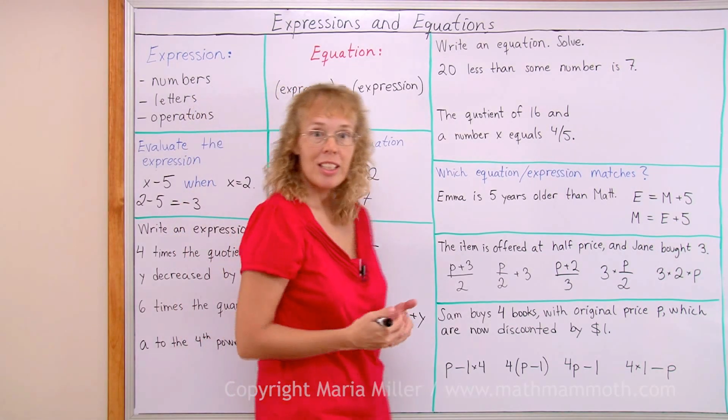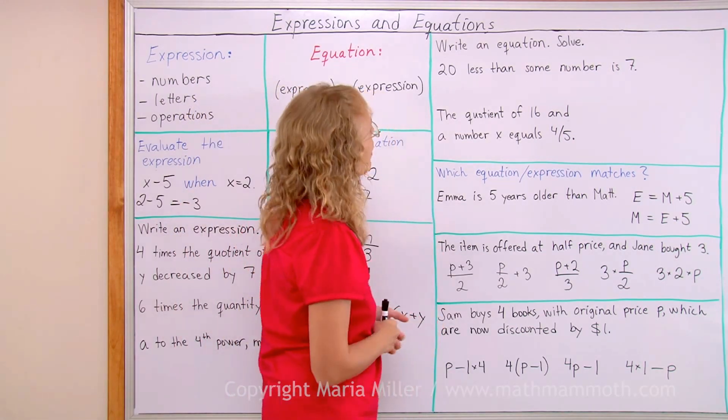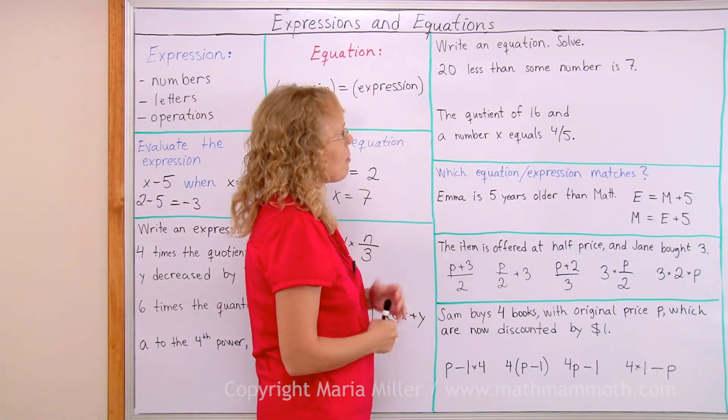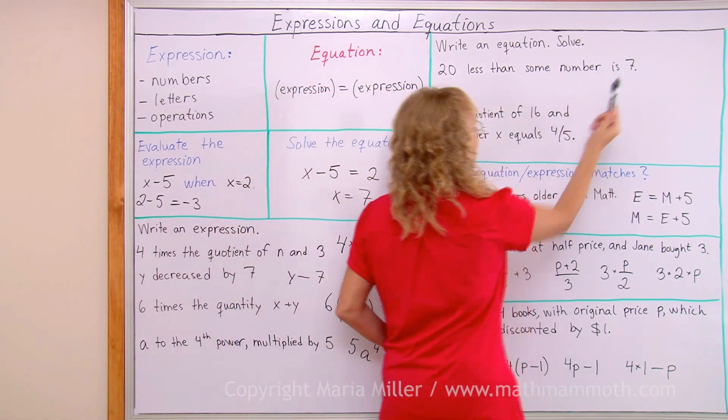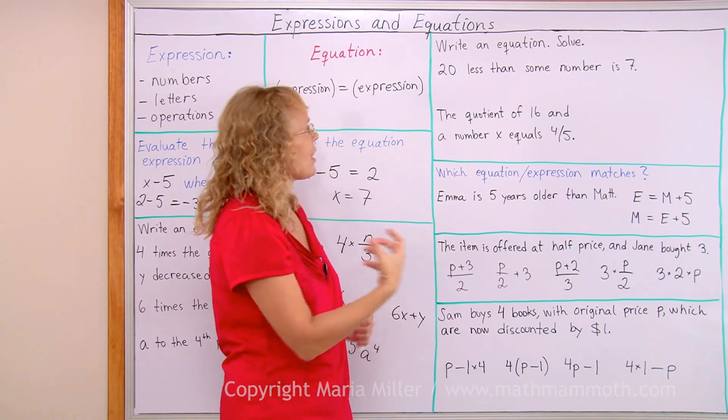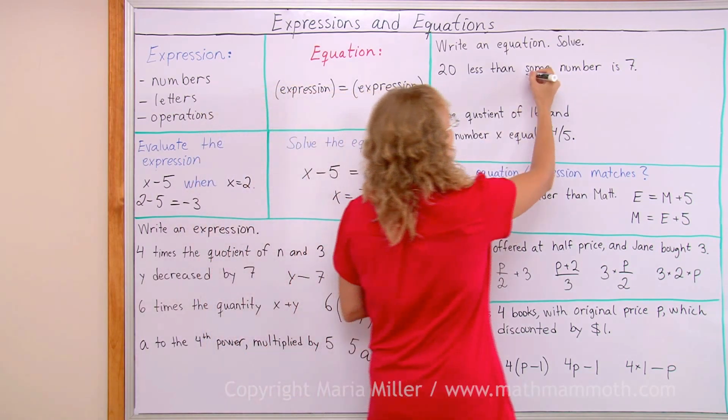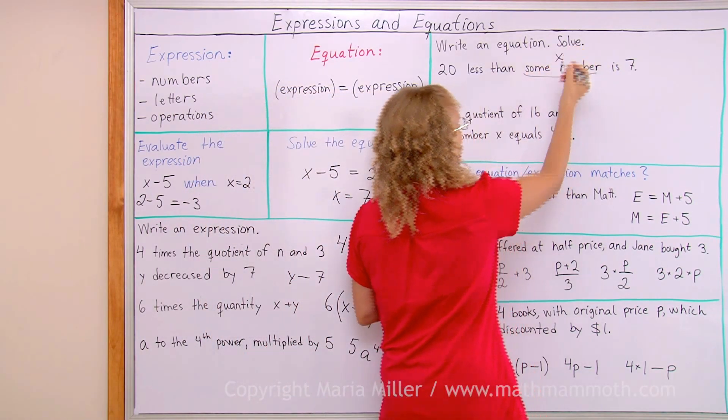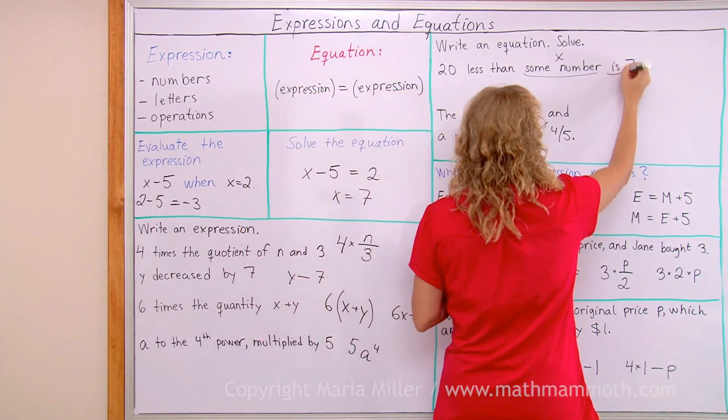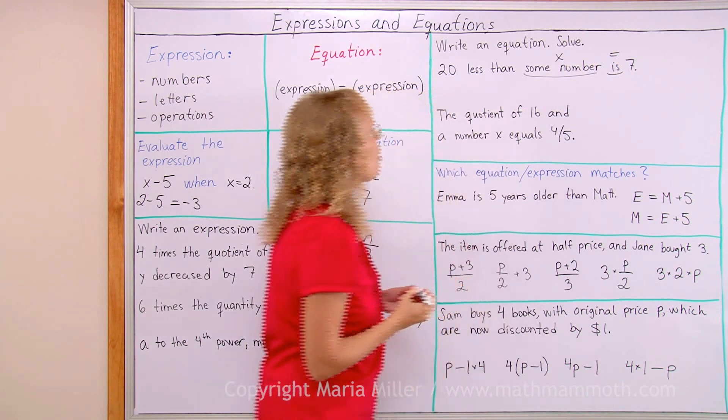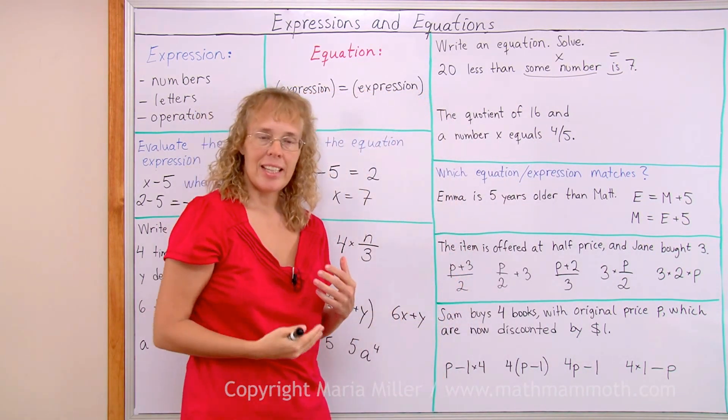Now here we're going to write an equation and then solve it. 20 less than some number is 7. Notice this is indicating where our equal sign will go. 20 less than some number. This some number here is our x or whatever letter you want to use for your variable.